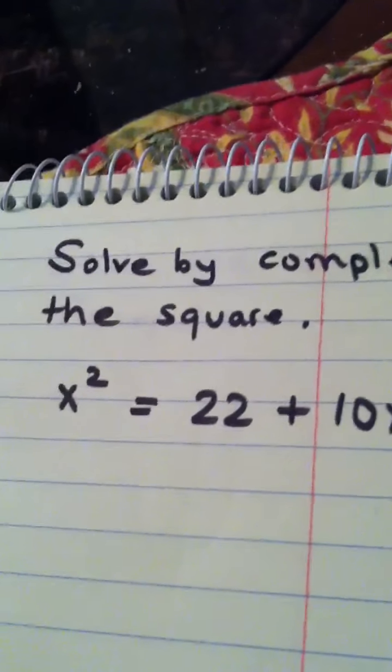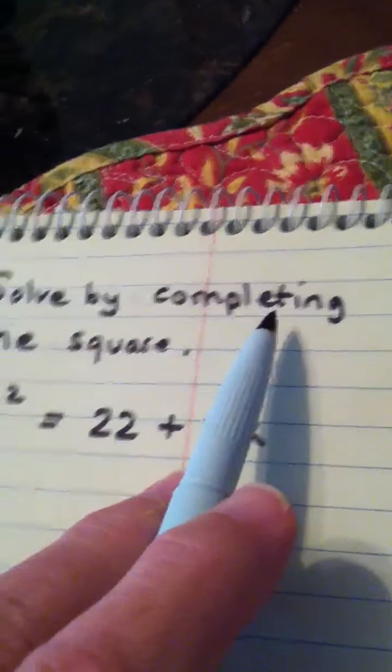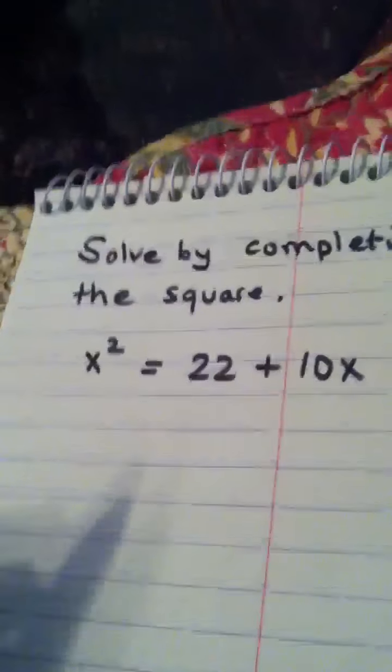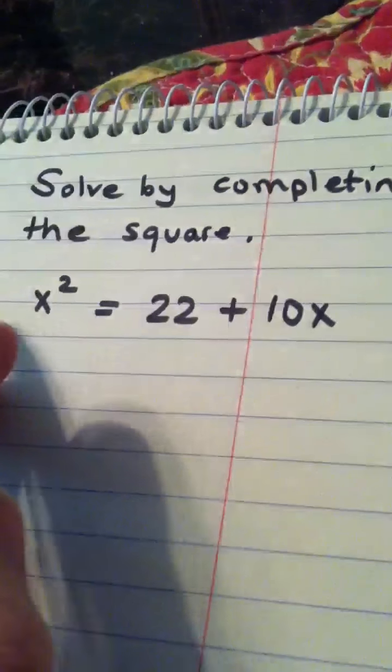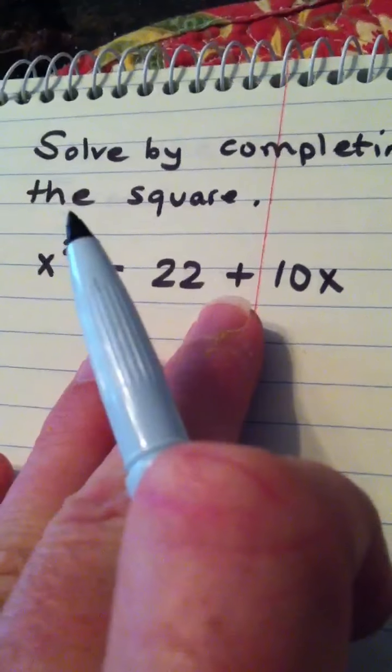Okay ladies and gentlemen, here's the next question which is another completing the square. Solve this by completing the square. This is a quadratic equation, so remember when you're completing the square, the first step is to get all of the x's on the left side of the equation and leave the constants on the right, or make sure they're there.